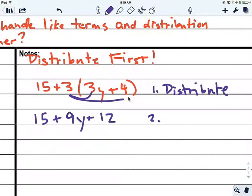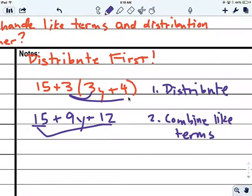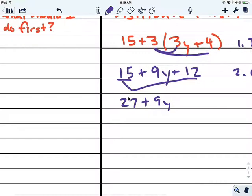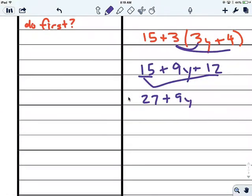And then my second thing is going to be to combine like terms. I only see two like terms, the 15 and the 12. Those will come together to make 27 plus 9y. So we distribute first, then you combine like terms. Let's ask another question here. What should I be careful?